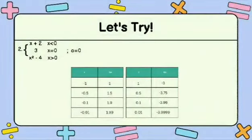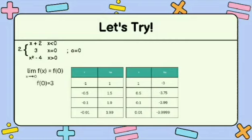For equation number 2, we need to find out if f of X equals X plus 2 where X is less than 0, equals 3 where X is equal to 0, and equals X squared minus 4 where X is greater than 0, with the value of a equal to 0, are all equal. Since the piece where X equals 0 cannot be solved by substitution, f of 0 is equal to 3.